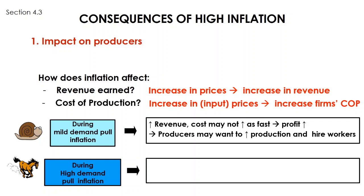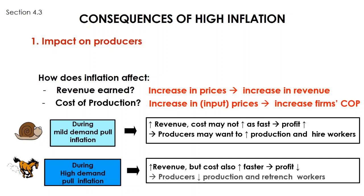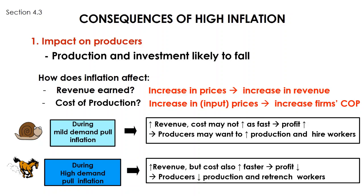However, when there is high demand-pull inflation, while revenue can still increase due to higher prices, the price of inputs is likely to skyrocket as well. Input suppliers are unlikely to settle for pre-agreed prices when prices are rising so fast. With input costs increasing faster, producers are likely to see their profit margins falling, discouraging increased production and potentially leading to lay-offs. In other words, during times of high inflation, production and investment are likely to fall.